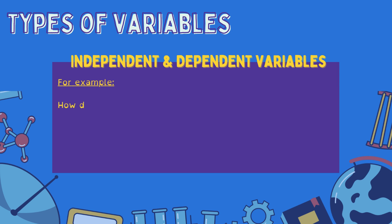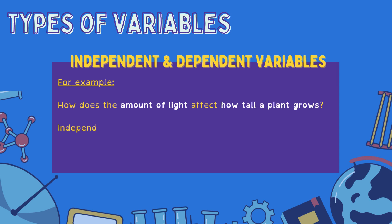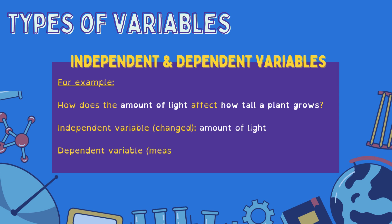Let's look at some examples. In this first example, the scientific question being asked is: how does the amount of light affect how tall a plant grows? In this investigation, the independent variable — the thing that we are changing — is the amount of light. And the dependent variable — the thing that we will measure to see if the amount of light has caused the plant to grow more or less — is how tall the plant will grow. The dependent variable depends on that independent variable; how tall the plant grows depends on the amount of light.